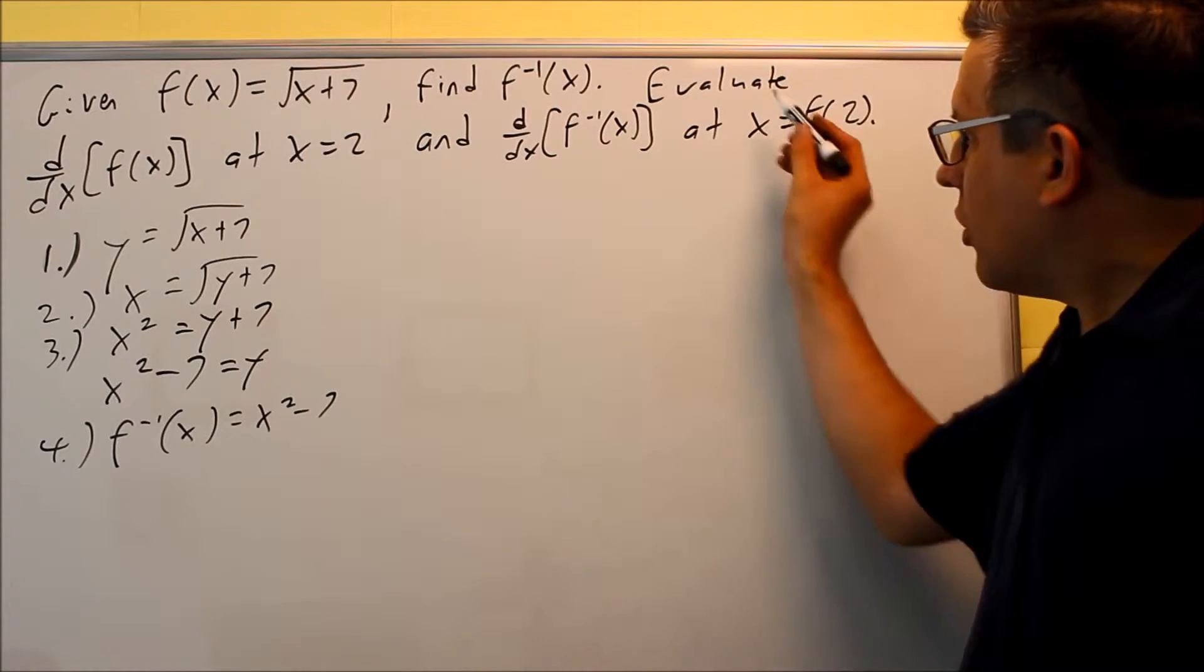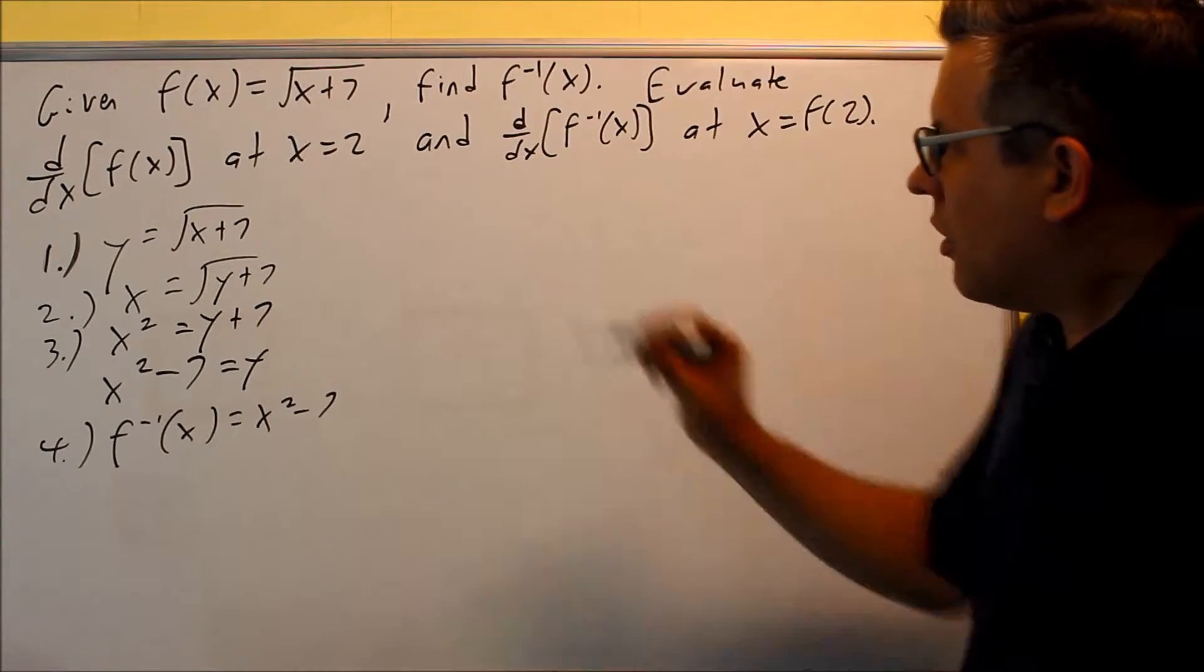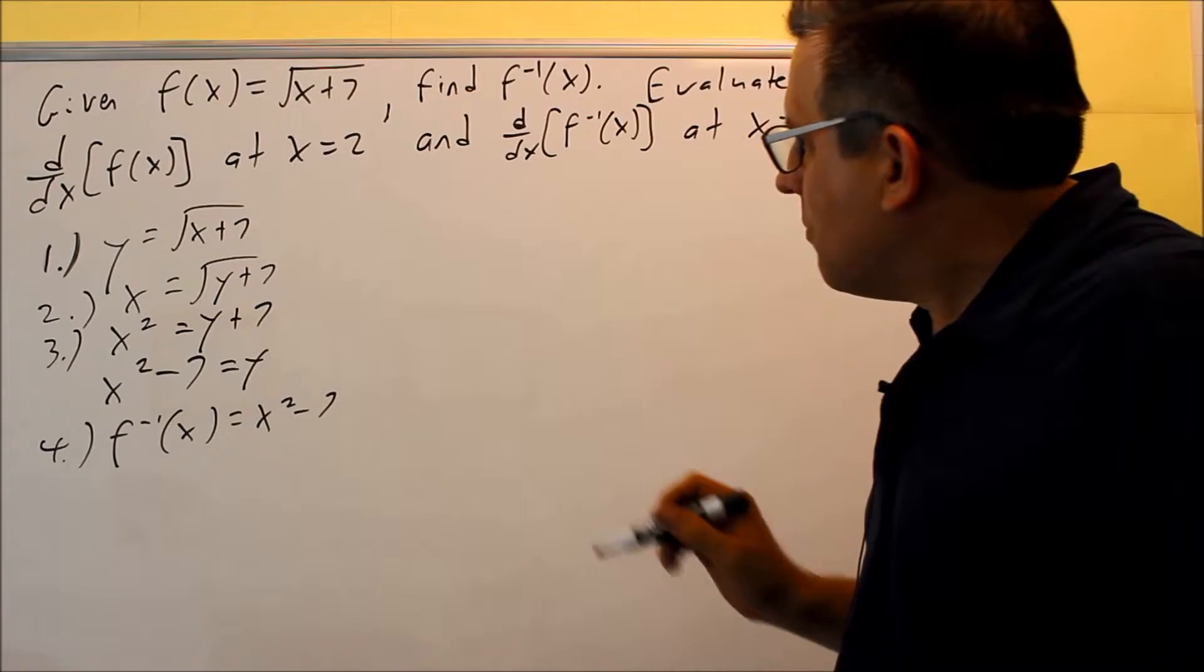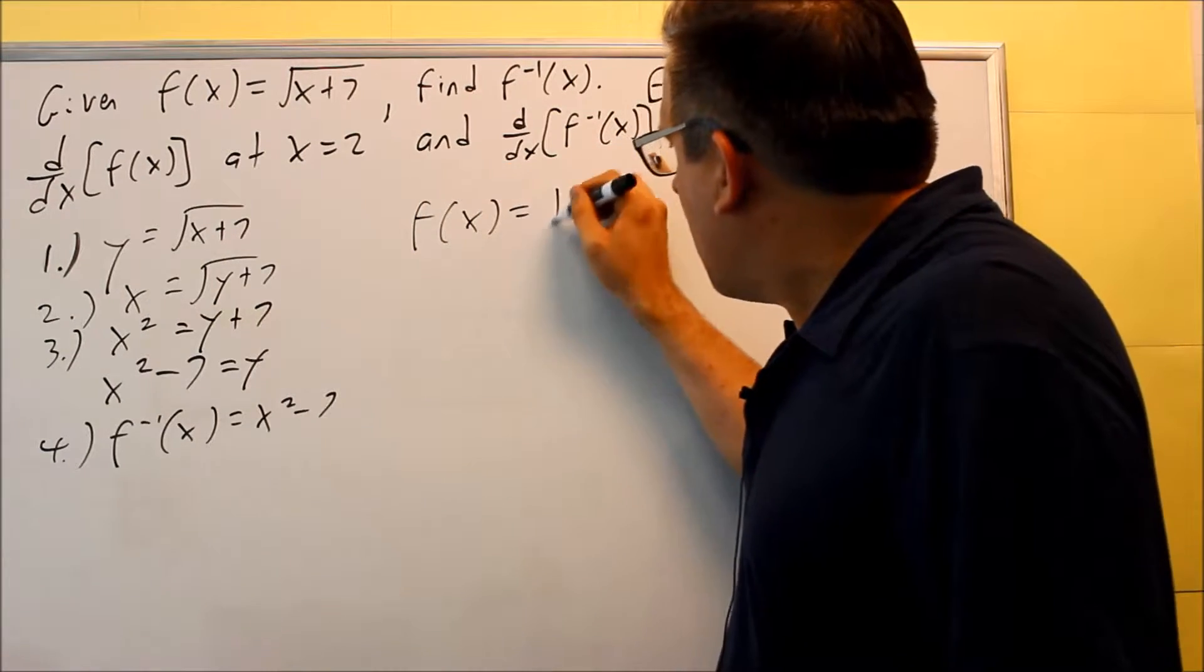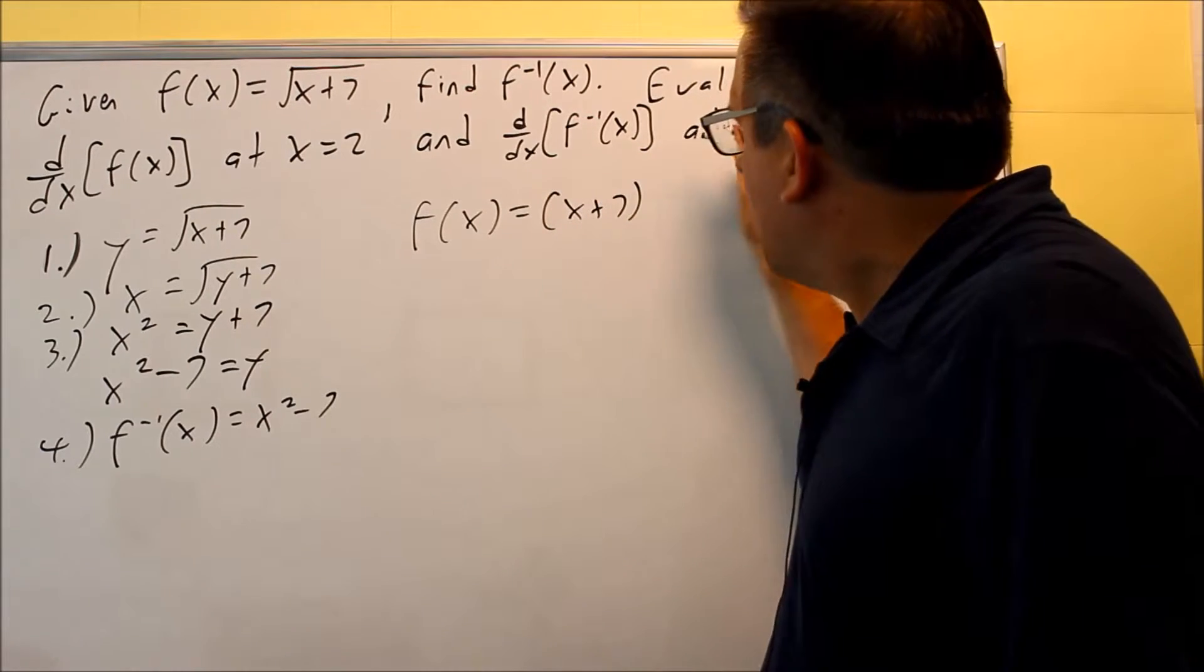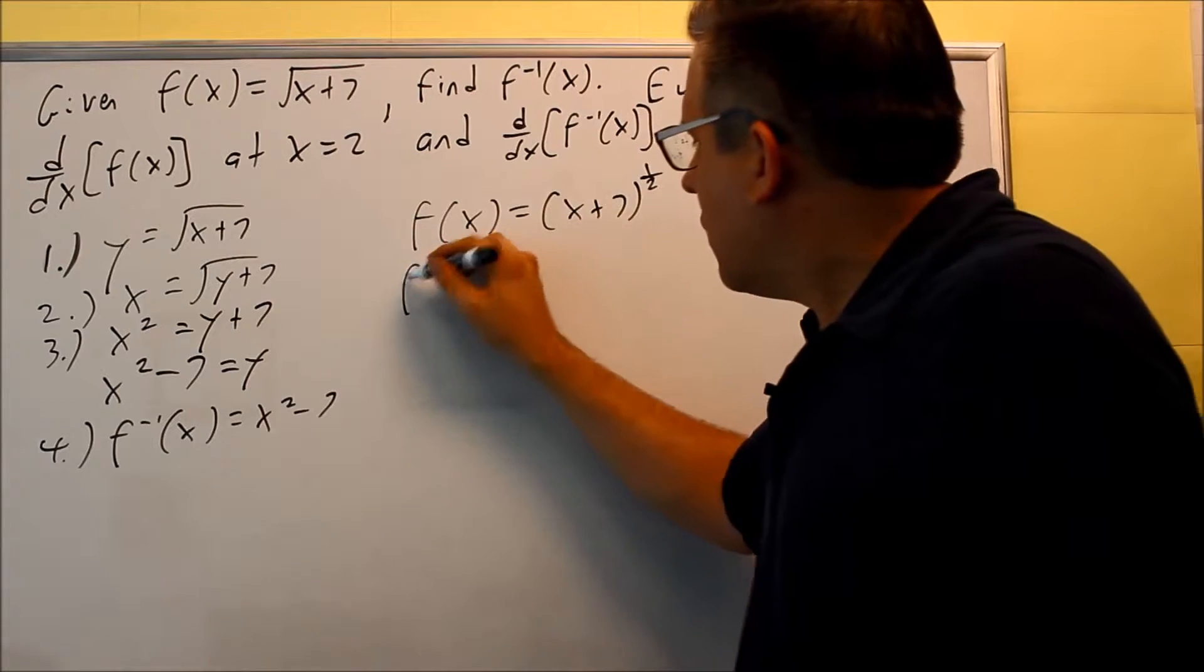Now that we have that, we want to evaluate the derivative of the original one at x equals 2. Here's the original: the square root of x plus 7. I'm going to rewrite this without the square root as a fraction power so I can find the derivative.